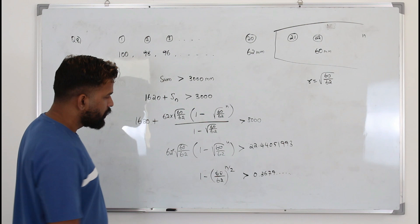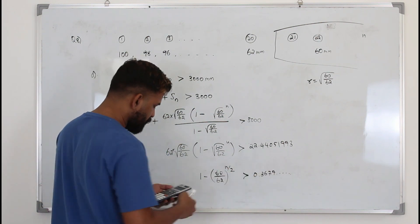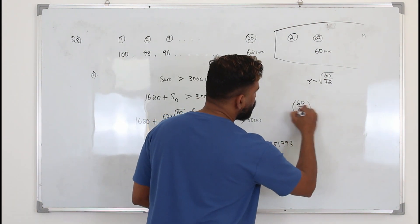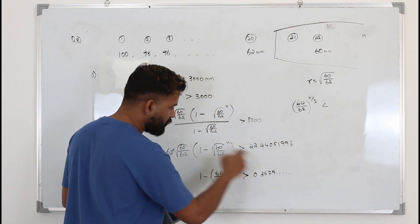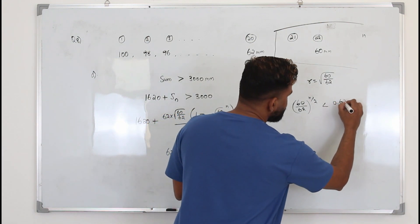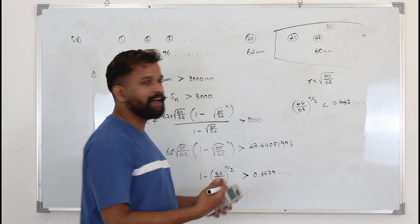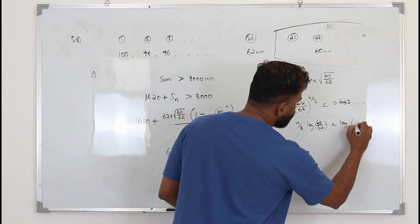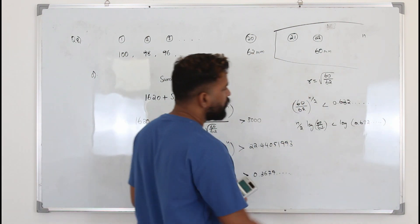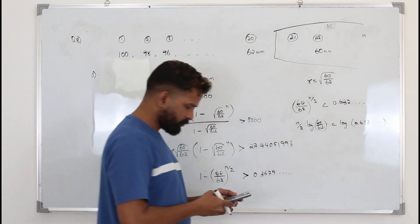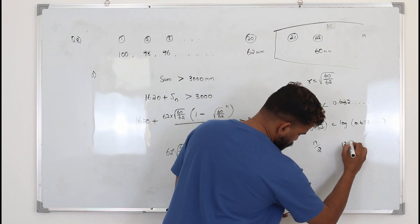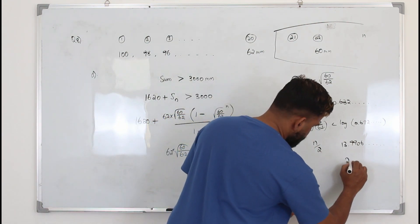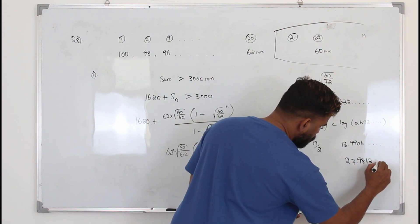Bring this term over: (60/62)^(n/2) is less than 0.632. Take logarithm both sides: (n/2)·log(60/62) < log(0.632). So n/2 equals 13.9906. Multiply by 2 to get n = 27.9812.